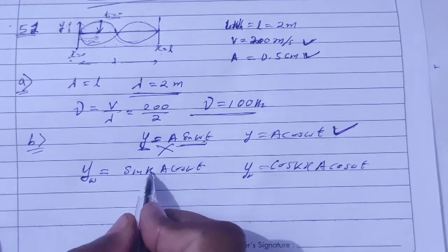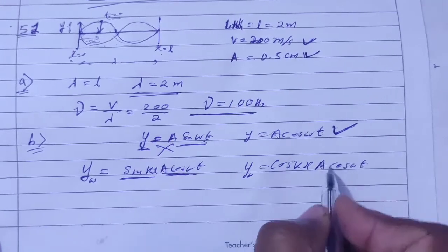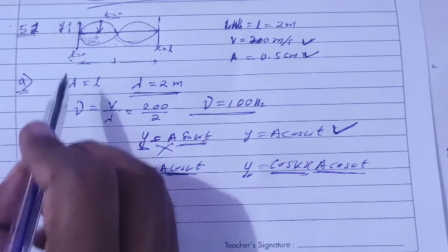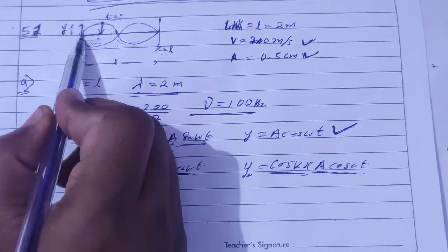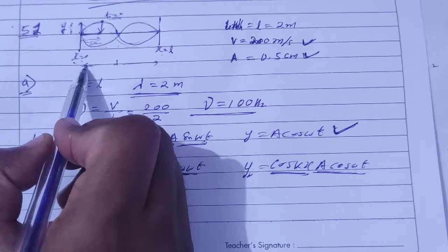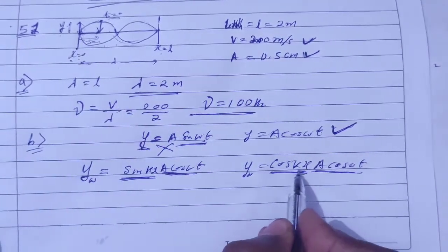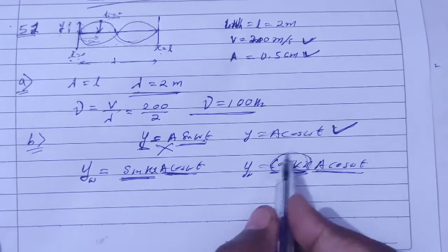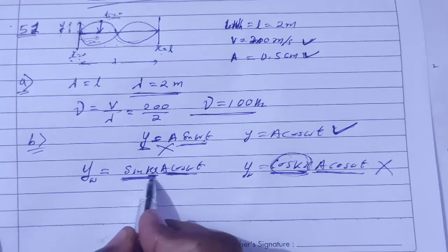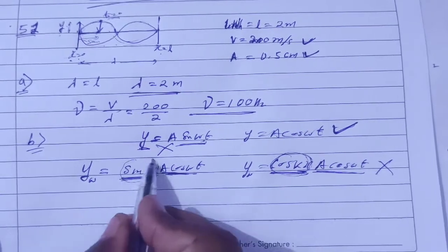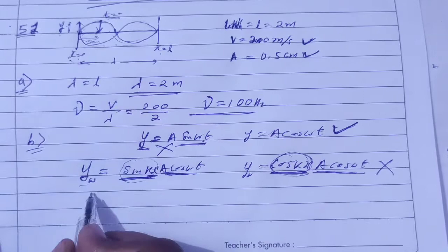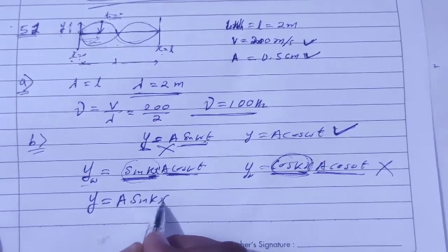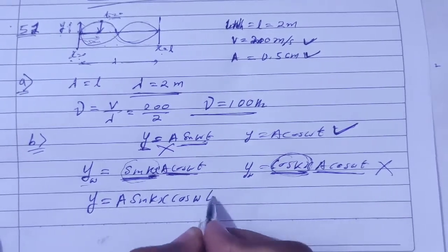Applying the boundary condition: at x equals 0, y equals 0. If we use cos(kx), putting x equals 0 gives cos(0) equals 1, which does not give y equals 0. But if we use sin(kx), putting x equals 0 gives sin(0) equals 0, so y equals 0 — this satisfies the boundary condition. Therefore the correct equation is y equals A sin(kx) cos(ωt).